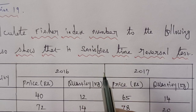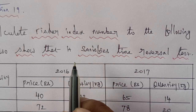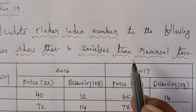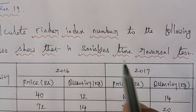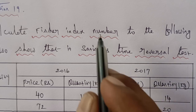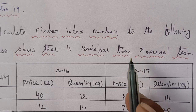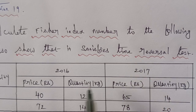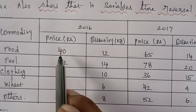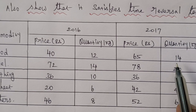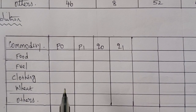Here we have the sum. The information includes: Fisher index number, factor reversal test, and time reversal test. In this sum, we deal with Fisher index number and time reversal test. The given question asks us to show that we can prove the time reversal test equals one. Now, the price columns are P0, P1 and quantity columns Q0, Q1. Apply a table column.